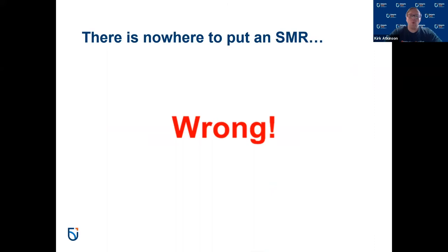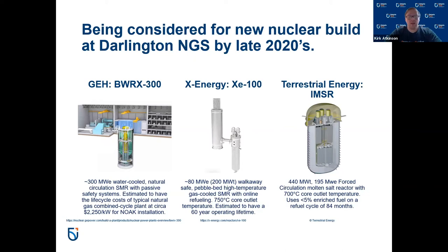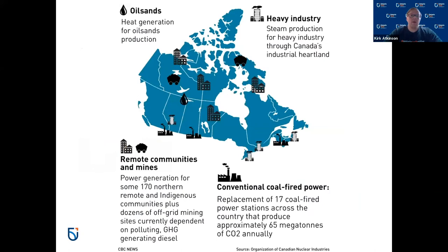People will say there's nowhere to put an SMR — well, that's wrong. Darlington is under consideration for the late 2020s. Three designs are currently under consideration: General Electric Hitachi's BWRX-300, X-energy's XE-100, and Terrestrial Energy's IMSR — all with different characteristics. Some may take a bit longer; some have advantages for higher-temperature output for process heat. They're under consideration by OPG and others. Elsewhere in Canada, there are a lot of places where SMRs could slot in as replacements — they're the right size to replace coal-fired power stations, and they can be used far away from population centers to drive industry in the north.